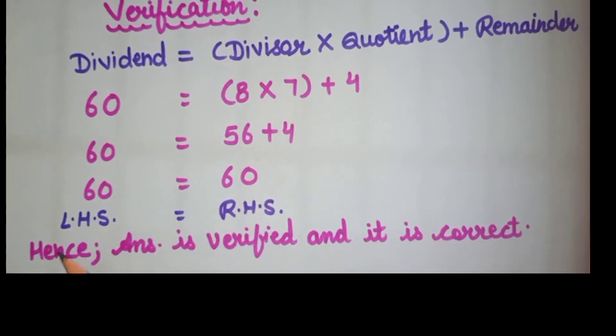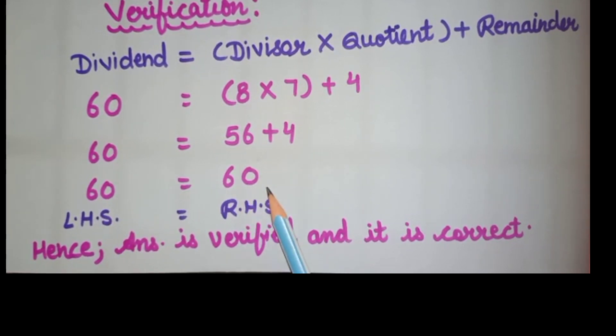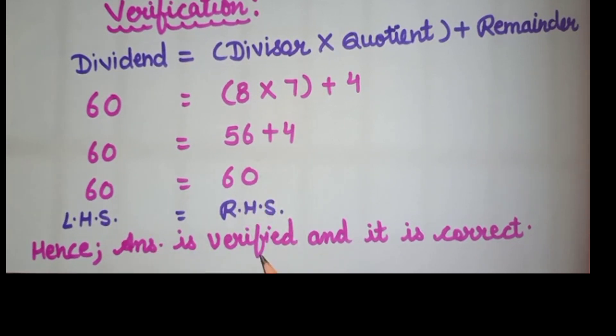As we can see that left hand side is equal to right hand side. 60 is equal to 60. Hence, answer is verified and it is correct. If our left hand side and right hand side are equal, it means our answer is correct.